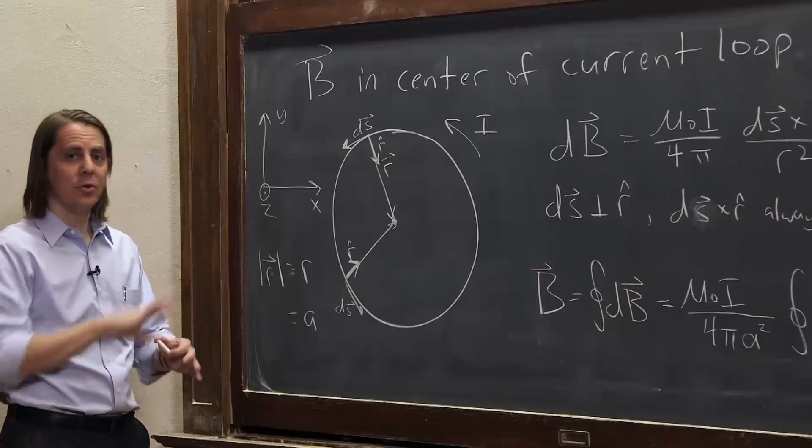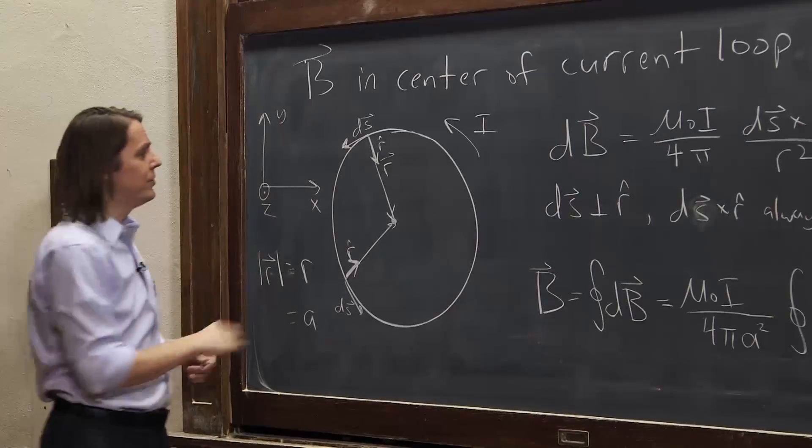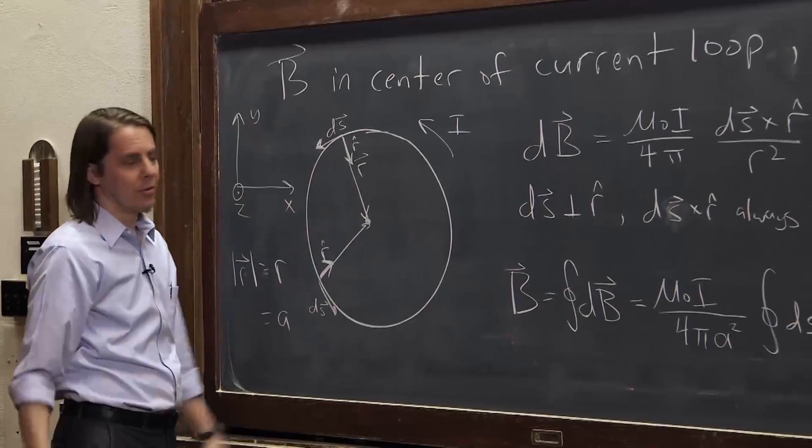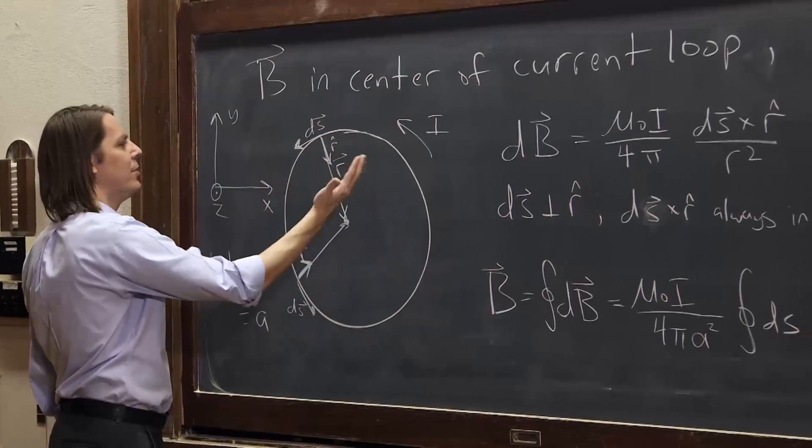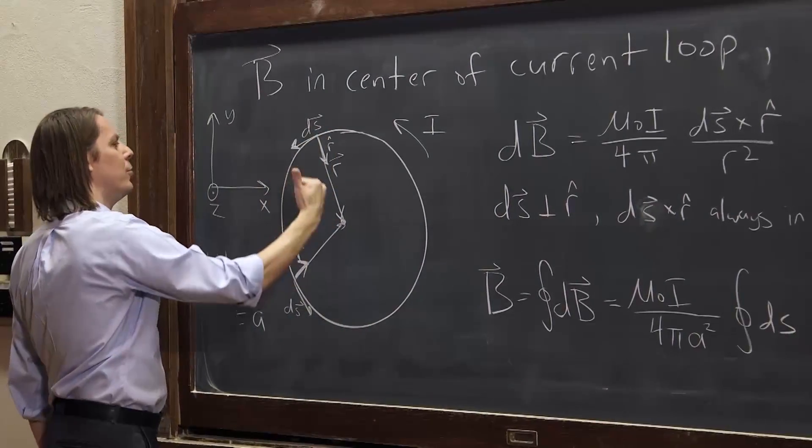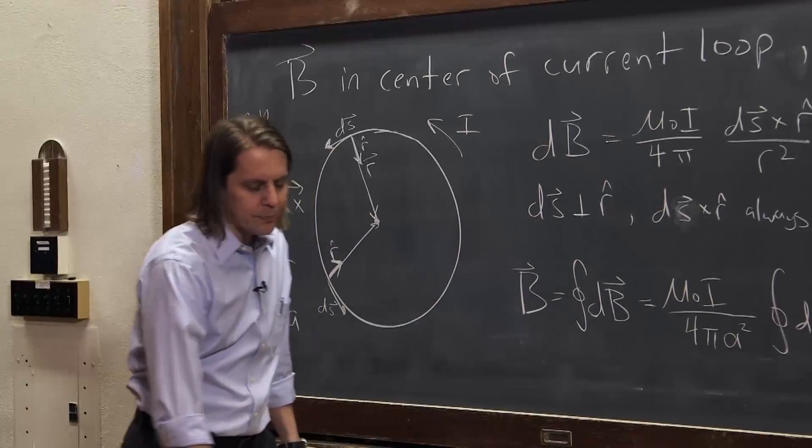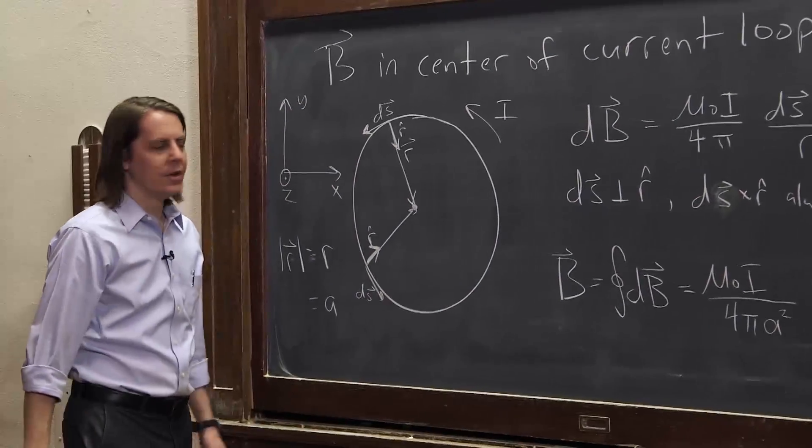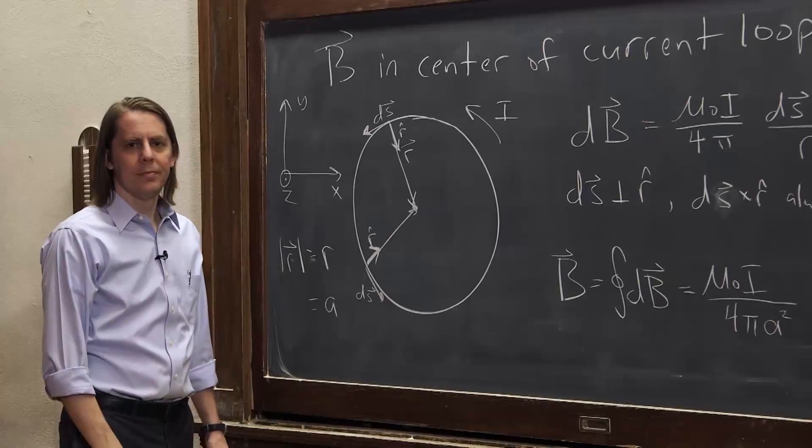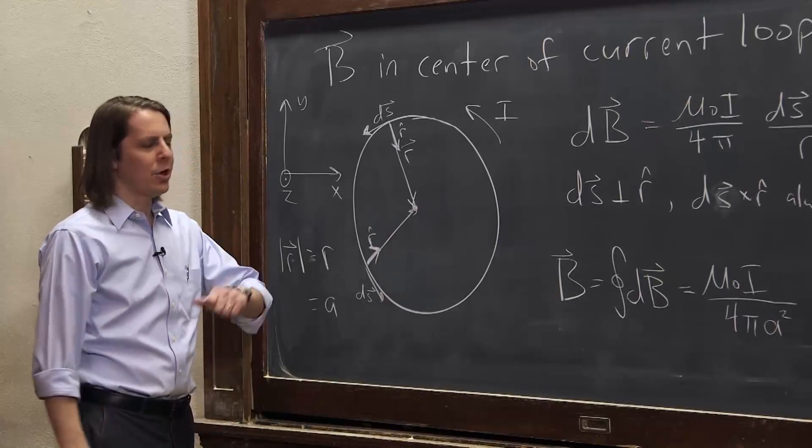To get the direction, if you don't want to do all the dS cross r vectors, you just right-hand rule. Everything's a right-hand rule. So in this case, something that goes around, goes with your fingers, your fingers go along the current, and your thumb will stick out always in the direction of the B field. All right, we'll do another complicated case in a minute.